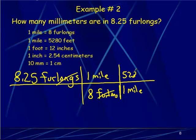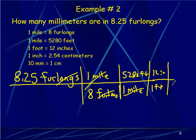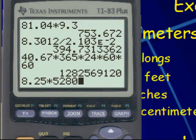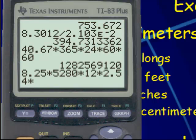1 mile is 5,280 feet — miles cancels, now I have feet. Keep going: 1 foot is 12 inches, 1 inch is 2.54 centimeters, 1 centimeter is 10 millimeters. Just like before, I multiply across the top, multiply across the bottom, and then divide: 8.25 times 5,280 times 12 times 2.54 times 10, divided by 8.